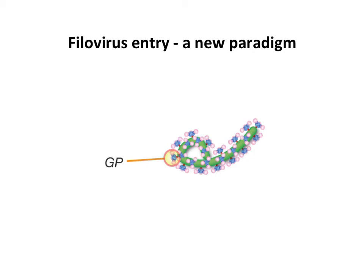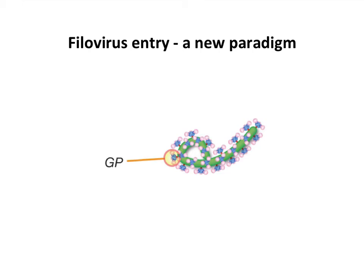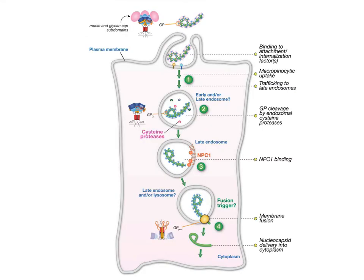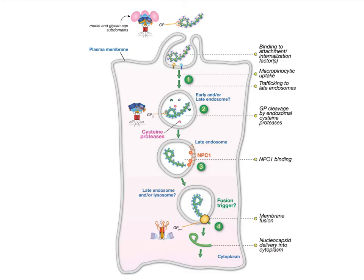The envelope is studded with glycoproteins — GP, as you can see here. The GP is what binds the receptor and what gets the virus into the cell. This is the scheme of filovirus entry: it's an envelope virus binding to a receptor. We don't actually know what the receptor is on the cell surface — it hasn't been identified yet — but presumably the virus has to bind to something.